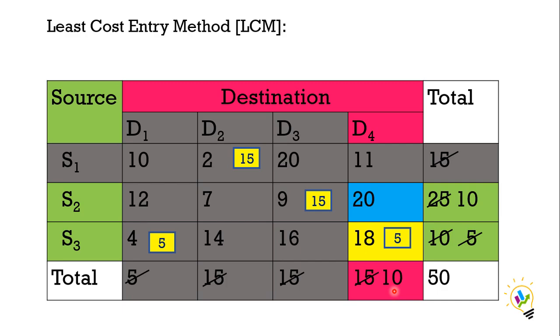Now the last one remaining is only 20. Now for 20, how many can I allocate? S2 can give 10 and D4 can take 10. Both are matching, so I am allocating 10. So I have allocated 10. D4 destination is satisfied and S2 quota is also completed.